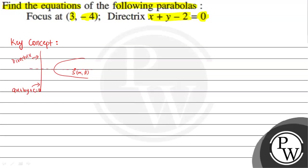By the definition of a parabola, suppose we have a point P with coordinates (h, k). The locus of point P is such that if we draw a line perpendicular to the directrix, the distance between P and M should always equal the distance between P and the focus. So PM always equals PS — this is the definition of a parabola.